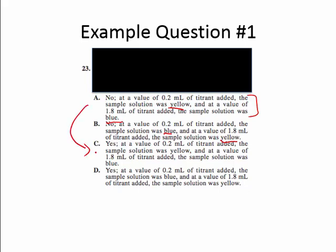We need to know: at 0.2 milliliters and 1.8 milliliters of titrin added, what was the color of the solution — yellow or blue? If we can determine which rationale is correct, we will be able to eliminate two answer choices without even needing to know what the question is or whether the answer is yes or no.